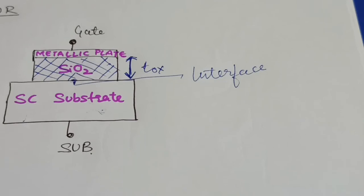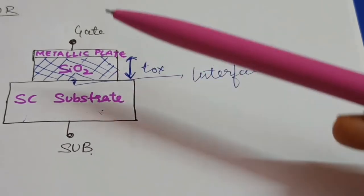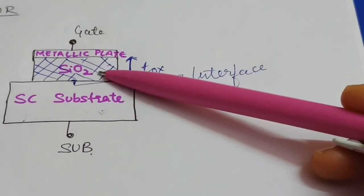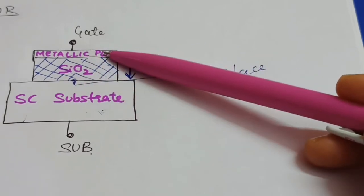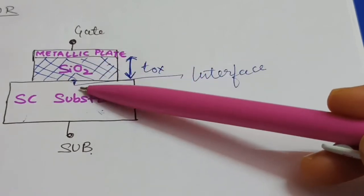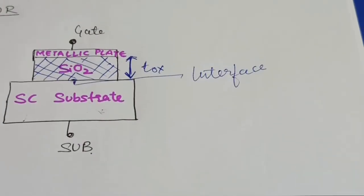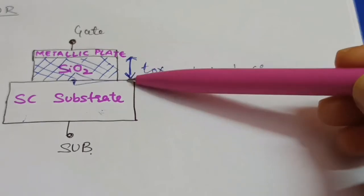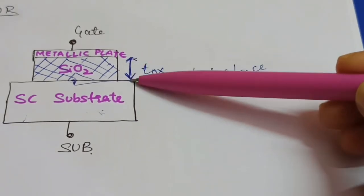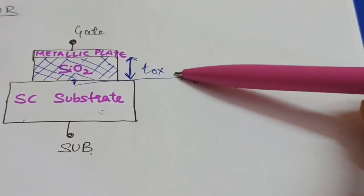The MOS capacitor is the heart of the MOSFET. It comprises three layers: first, a semiconductor substrate; then an oxide layer, which is generally silicon dioxide; and then a metallic layer. The interface is also called the surface of the semiconductor, and the thickness of the oxide layer is denoted by TOX.